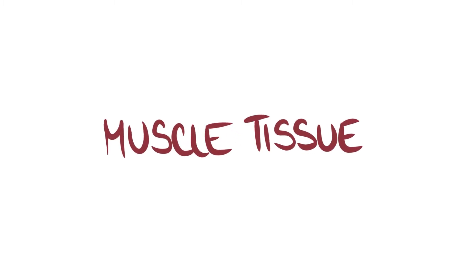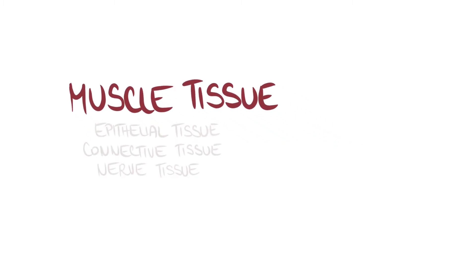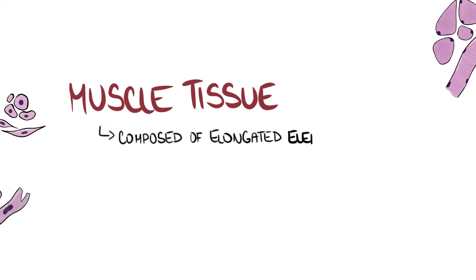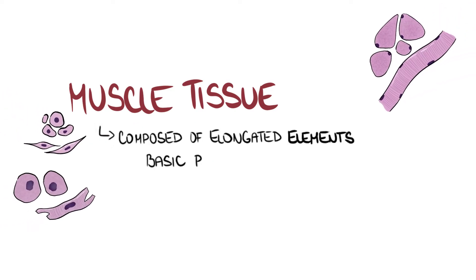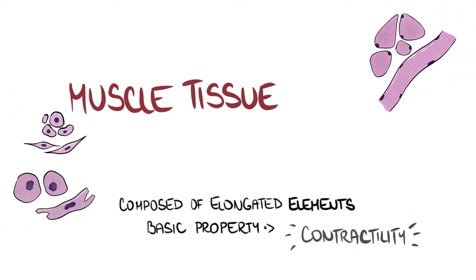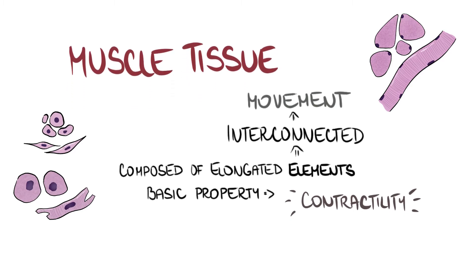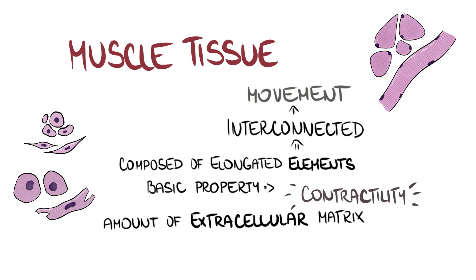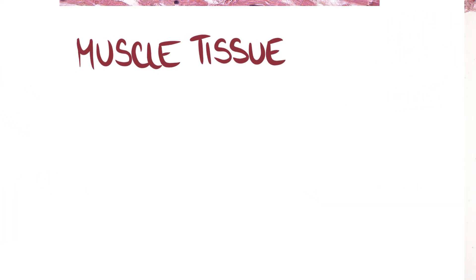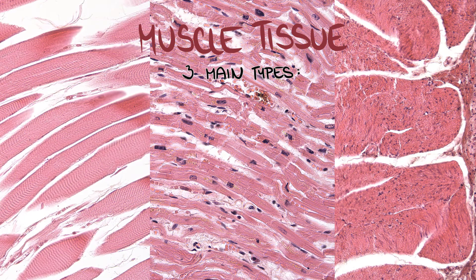Muscle tissue is one of the four basic types of tissues in a human body. It's composed of elongated elements whose basic property is contractility. These elements are interconnected in order to synchronize and create movement. The amount of extracellular matrix is relatively small. There are three main types of muscle tissue: skeletal muscle tissue, cardiac muscle tissue, and smooth muscle tissue.